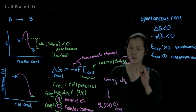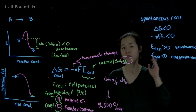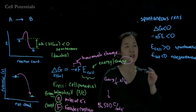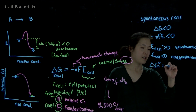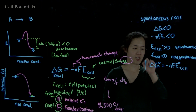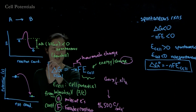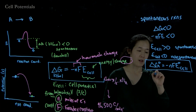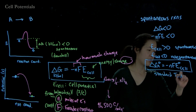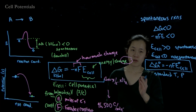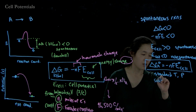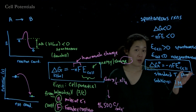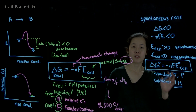Delta G and E_cell change for every different reaction and under different conditions. What you can read off a table is the standard cell potential and standard free energy. So: delta G naught equals negative nFE°_cell. This is the key takeaway of the entire lecture — you must know this equation. The naught means standard conditions: standard temperature, pressure of one bar, and for solutions, concentration of 1 molar. If concentrations differ from 1 molar, the cell potential will change, and we'll discuss those effects in the following lecture.